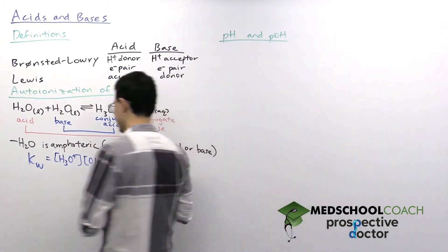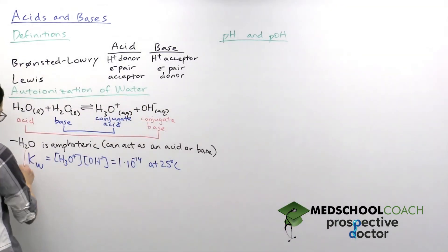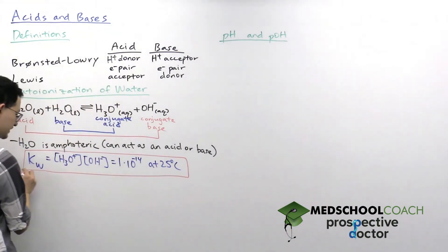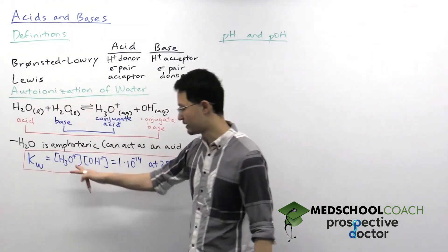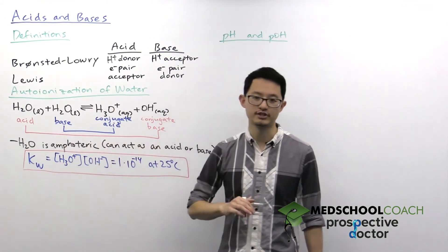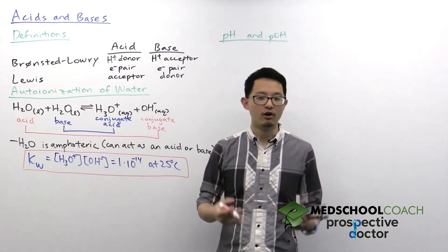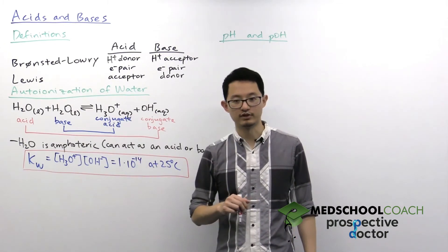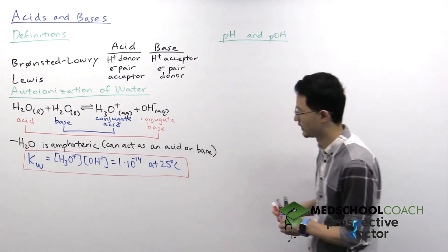So multiple things in this expression. Number one, you do want to have memorized that KW is equal to 10 to the negative 14. Number two, you also want to have memorized that the concentration of hydronium ion times the concentration of hydroxide ion always multiplies to equal one times 10 to the negative 14.